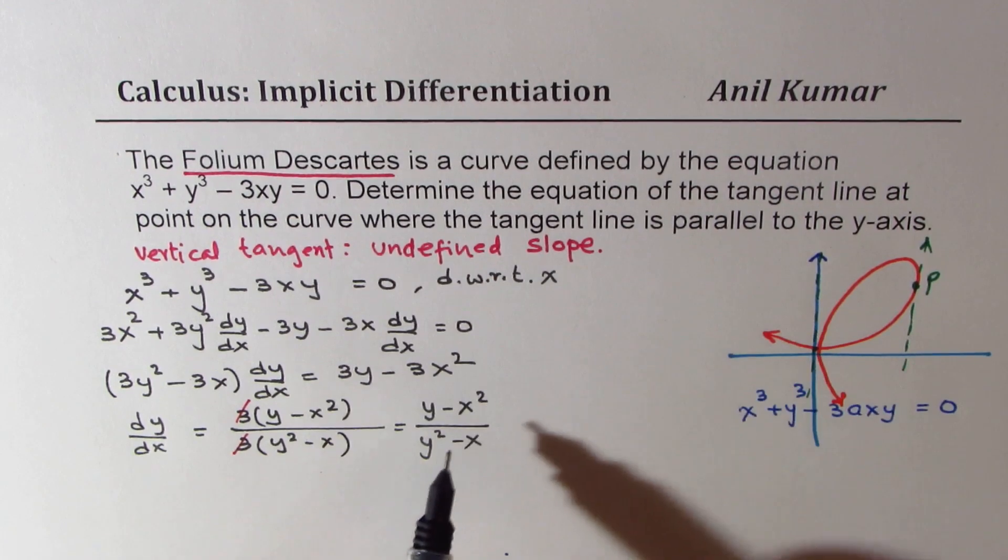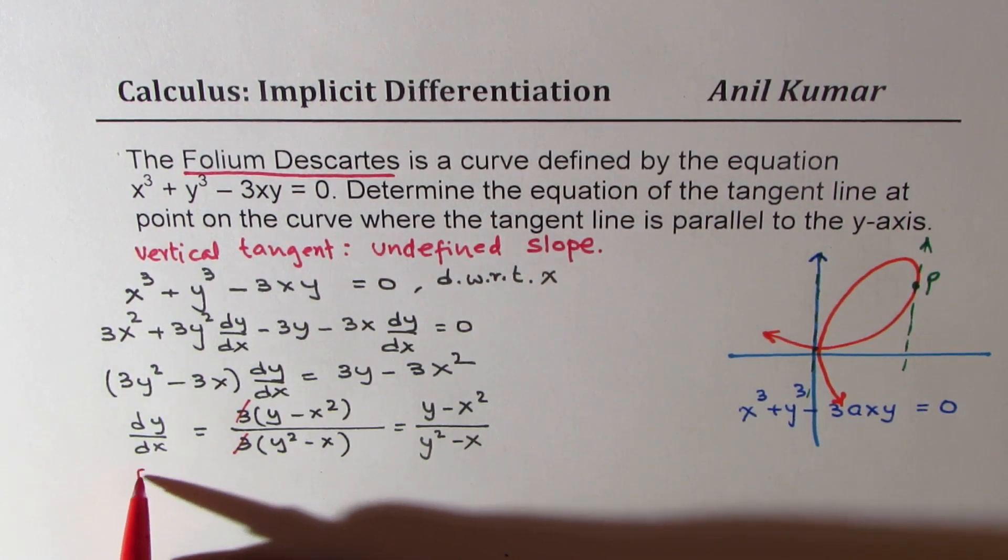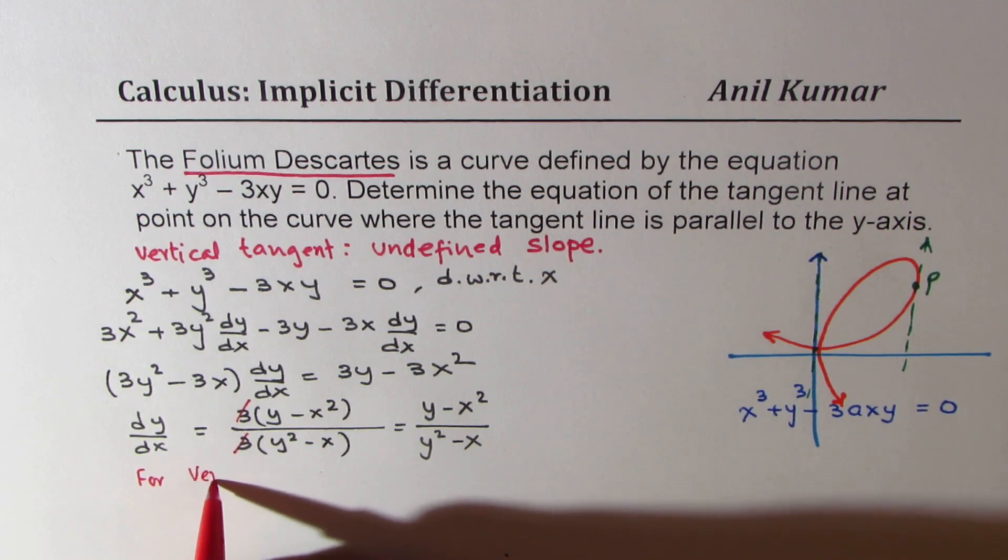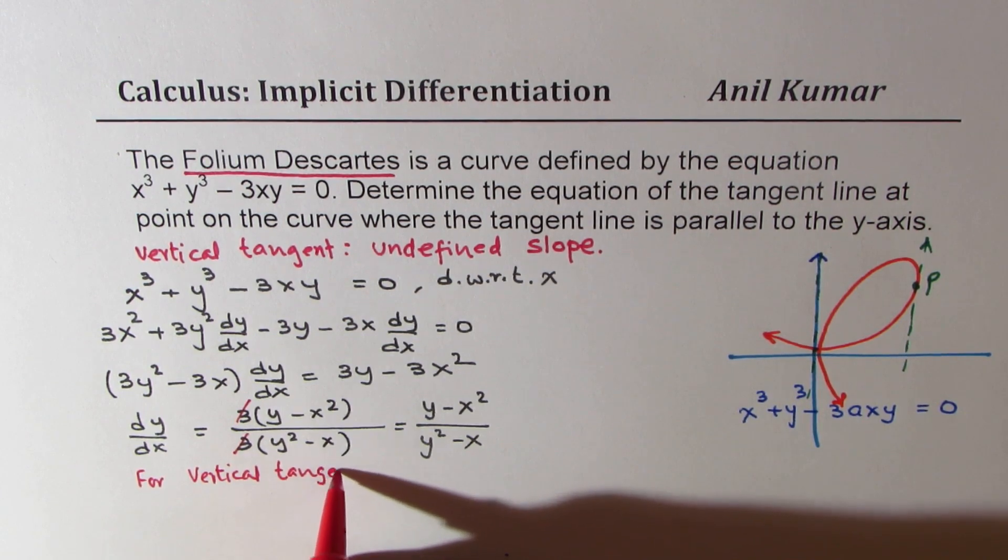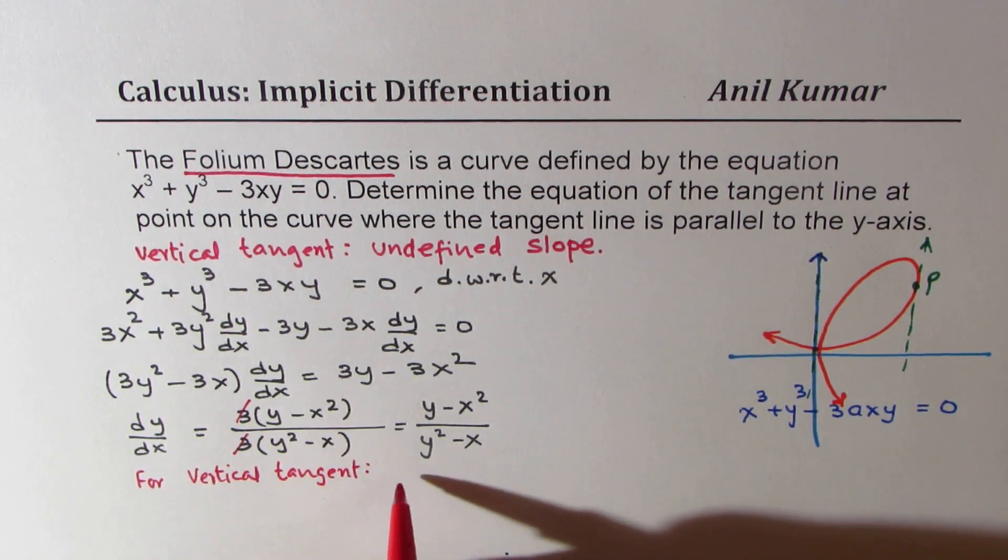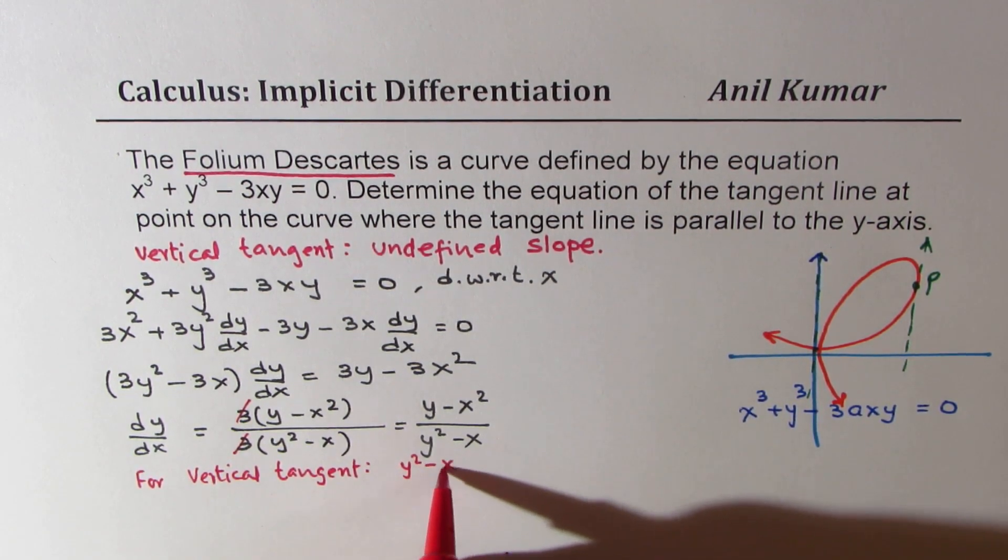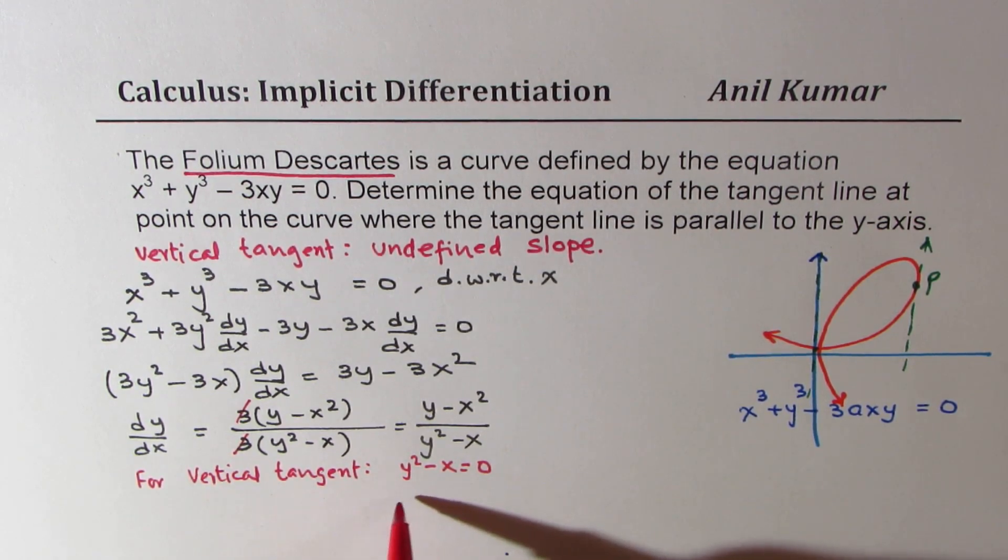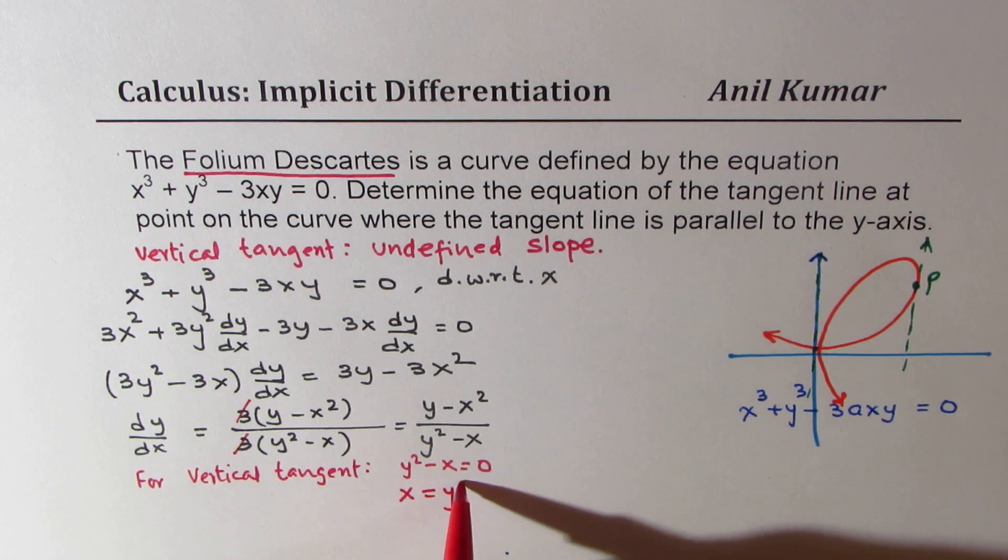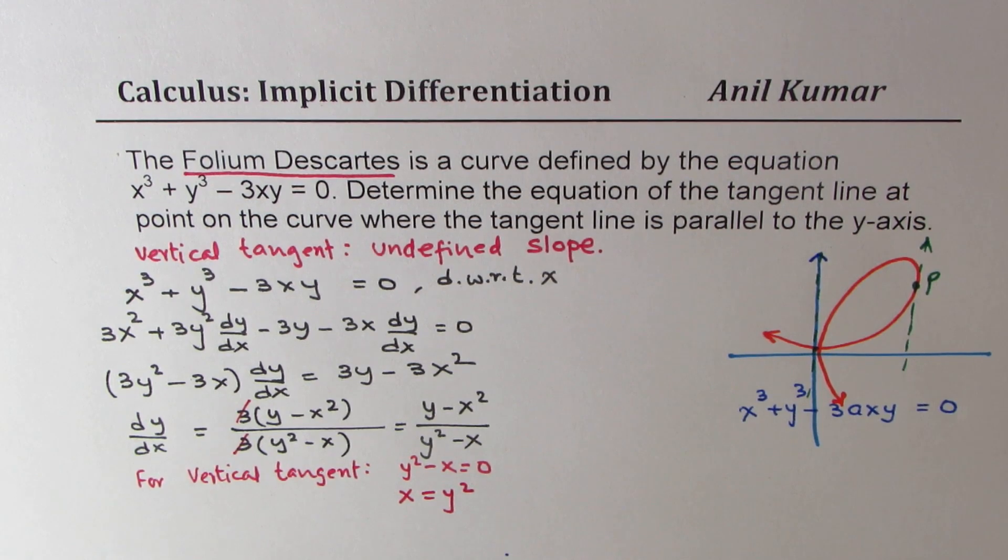For undefined slope, denominator should be 0. So for vertical line, y squared minus x should be equal to 0. And that gives you the condition that x equals to y squared. So from this derivative, we get our condition. And now we can find the points.